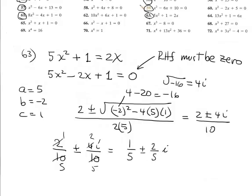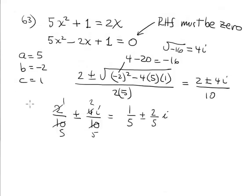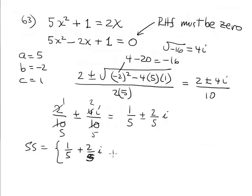Reduce to lowest terms: 2/10 = 1/5 and 4/10 = 2/5. So the solution set is {1/5 + 2/5 i, 1/5 - 2/5 i} — two complex conjugate numbers.